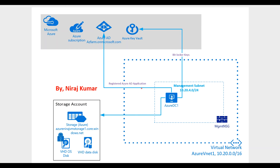This is how our setup is going to look. We will have one Azure VM created in Azure, a storage account consisting of two disks — one VHD operating system disk and one VHD data disk. We will also create an Azure Key Vault and assign permissions for this VM. We will register an application account in Azure AD and use that service principal to grant permissions on the Azure Key Vault.